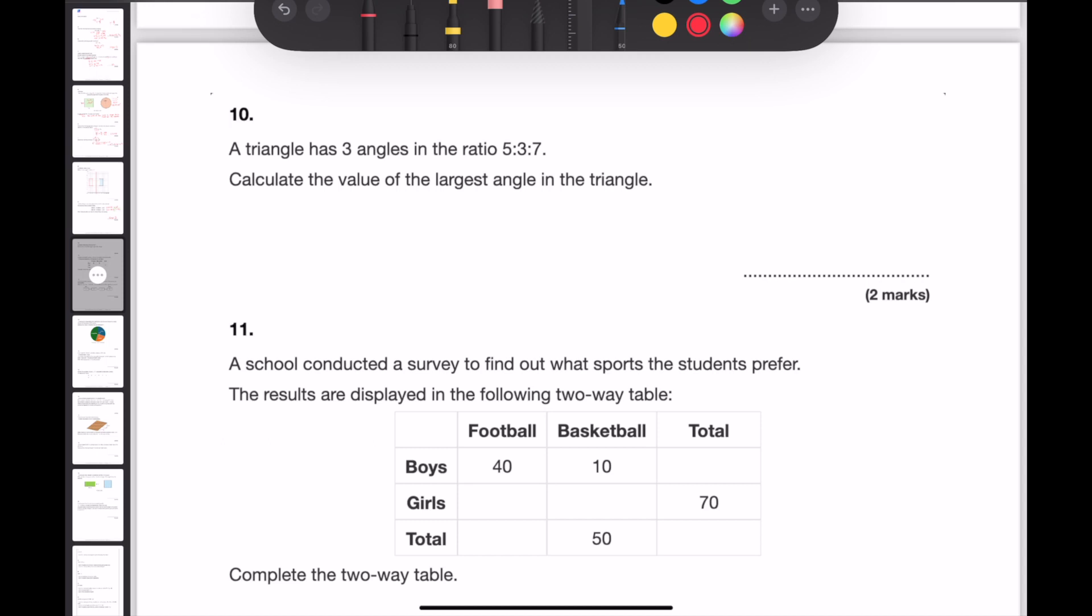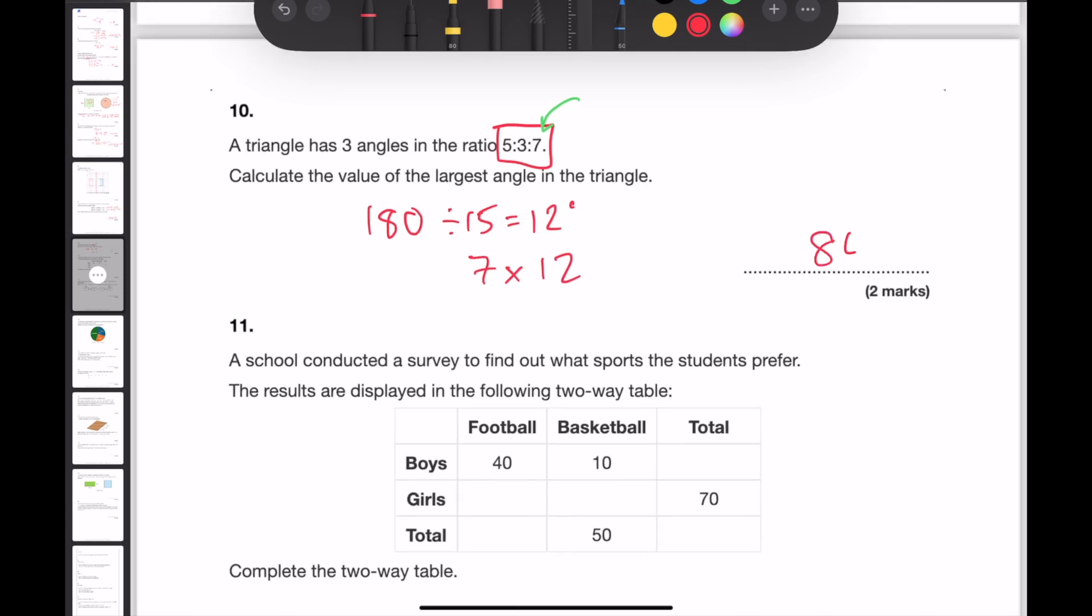Question 10. A triangle has 3 angles in the ratio of 5 to 3 to 7. Calculate the value of the largest angle in the triangle. Angles in a triangle add up to 180. And we can see that we're having to split this into 15 parts altogether. 180 divided by 15 means that each part is now worth 12 degrees. The largest angle is going to be represented by the biggest number of parts. So the largest angle can be calculated by 7 times by 12, which would then give me 84 degrees as being the largest angle in the triangle.